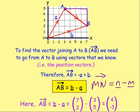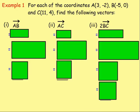Let's try some examples. Example 1, for each of the coordinates A(3, -2), B(-5, 0), and C(11, 4), find the following vectors. So we've got to find AB, AC, and 2BC. So let's start at the very beginning. To work out AB.